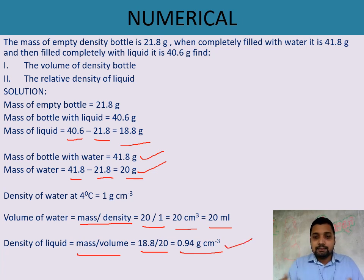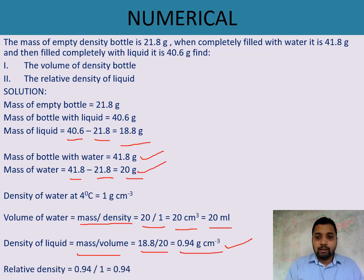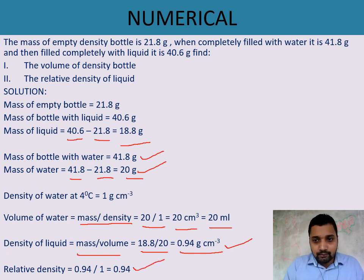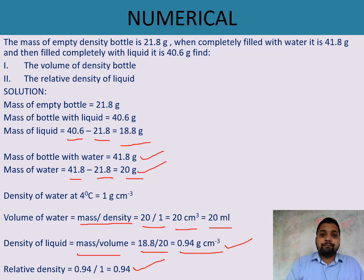The density of the liquid (0.94 g/cm³) is less than that of water. Relative density = density of liquid / density of water = 0.94 / 1 = 0.94. This means the liquid's density is 0.94 times that of water. Relative density has no unit — it is a scalar quantity having only magnitude.